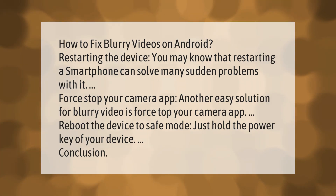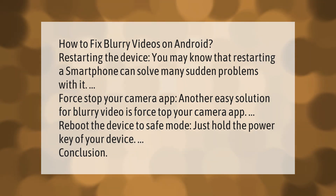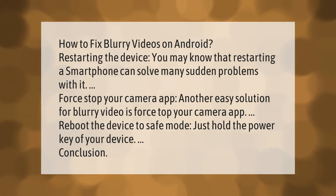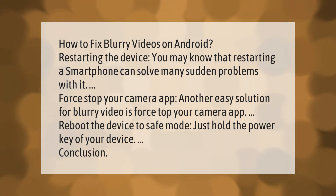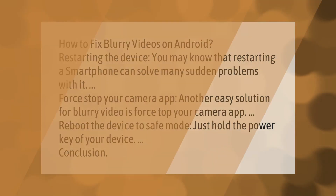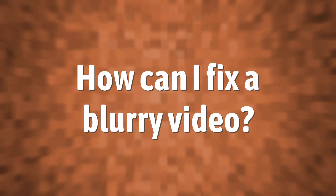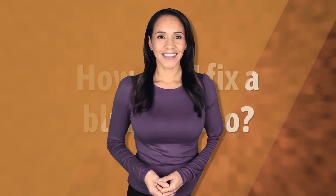Force stop your camera app. Another easy solution for blurry video is to force stop your camera app. You can also reboot the device to safe mode — just hold the power key of your device.